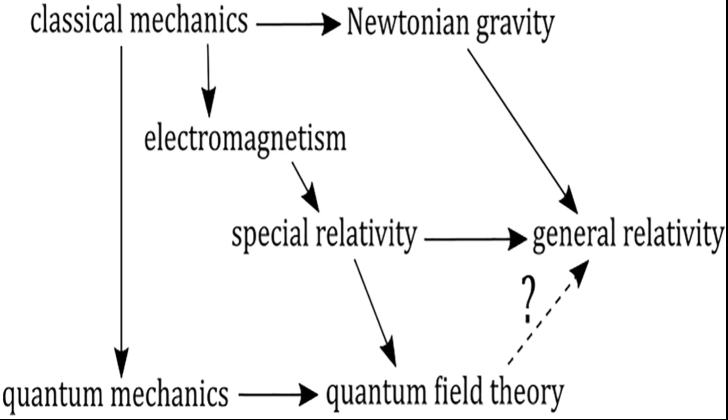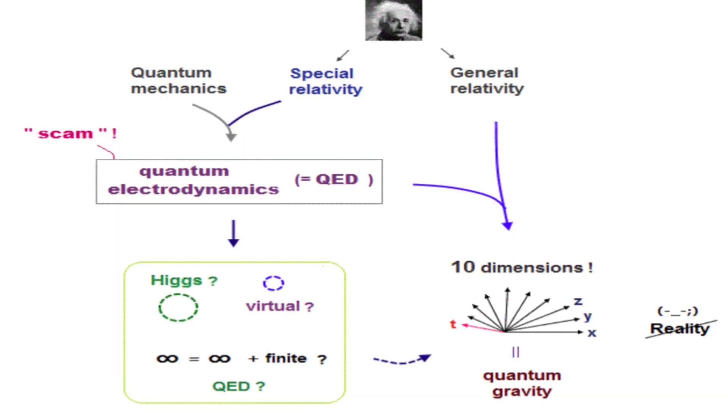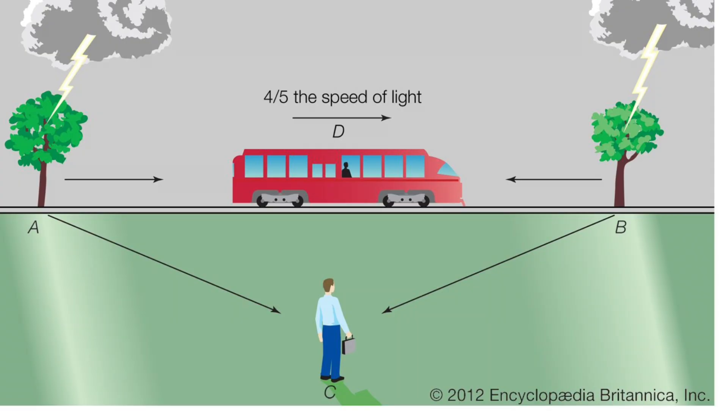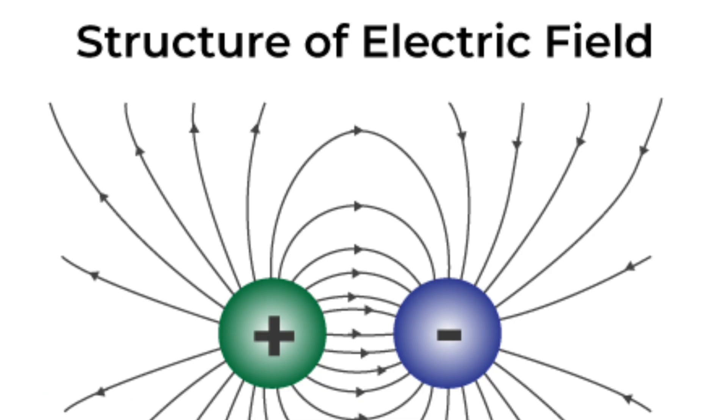Quantum mechanics is the theory of how atoms and subatomic particles behave in a probabilistic and uncertain way. Special relativity is the theory of how space and time change when things move very fast. Classical field theory is the theory of how forces and energy are transmitted through fields, such as the electric and magnetic fields.